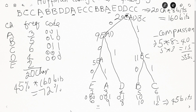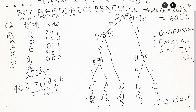Looking back at the codes: B is 1-0, C is 1-1, A is 0-0-1. You can see how much savings we achieve. This is the Huffman compression algorithm — thank you.